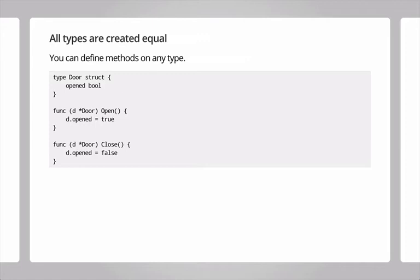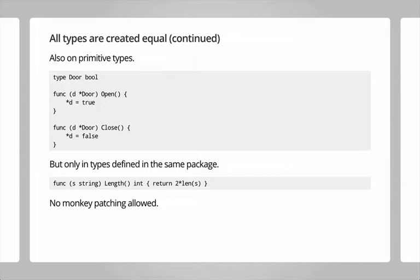Unlike Java, where methods are defined inside the type declaration itself, in Go methods are defined separately. This means you can also define methods on types that aren't structs — for example, a Door that's just a boolean. You can define methods with the same syntax on that type. There is a limitation though: you can only define methods on types defined in the same package — otherwise you could modify the length method for string and return a double, which would be a mess.